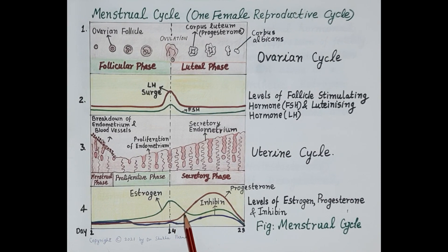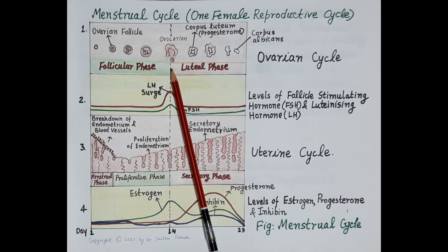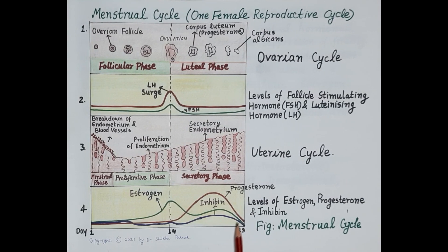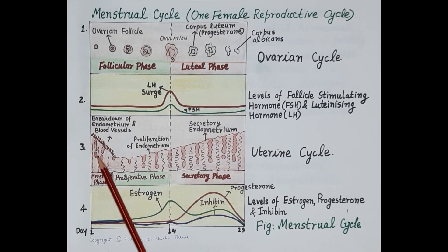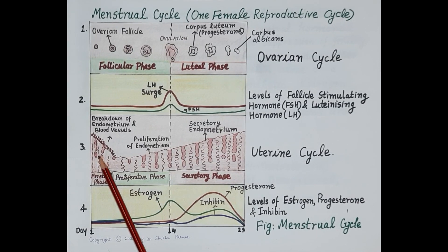If the released egg is not fertilized, both progesterone and estrogen levels fall. This causes breakdown of the endometrium and blood vessels of the endometrium. The process is called menstruation, and the occurrence of menstruation confirms that the egg was not fertilized, marking the beginning of another reproductive cycle.